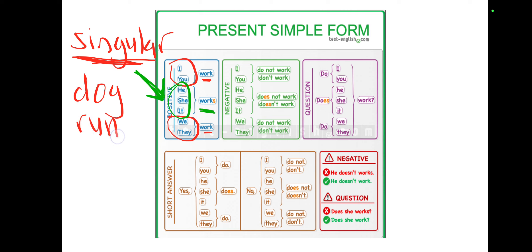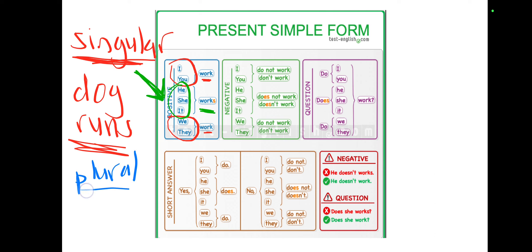Because 'dog' is singular, you have to add 's' — so it becomes 'dog runs.' On the other hand, if it's plural — plural means more than one — 'dogs' with an 's' means there's more than one dog, maybe three or five. In that case, you use the base word with no 's' added at the back, because it is plural.